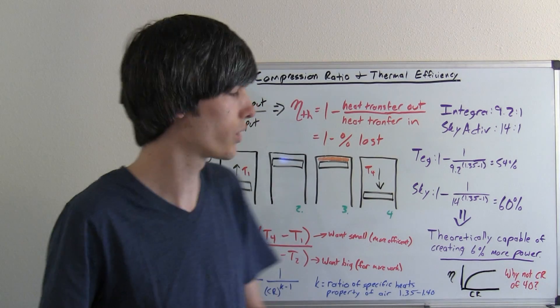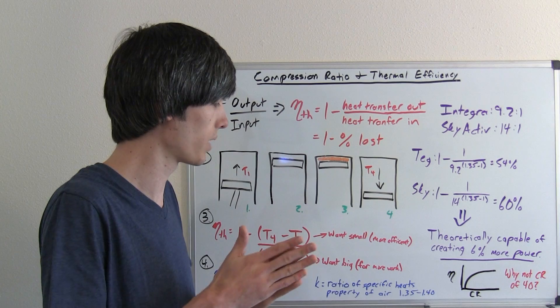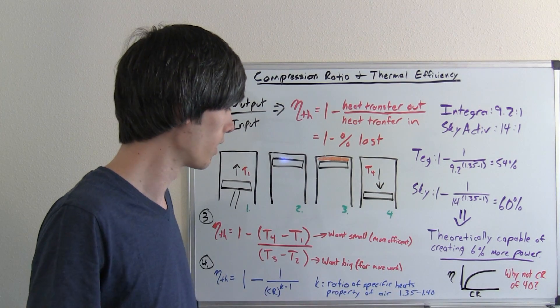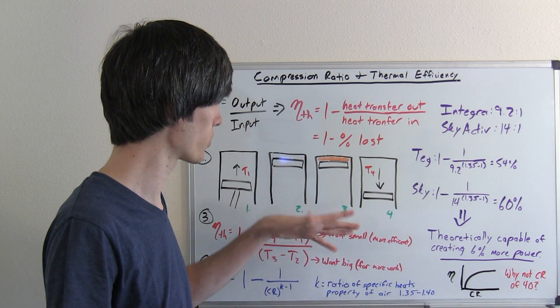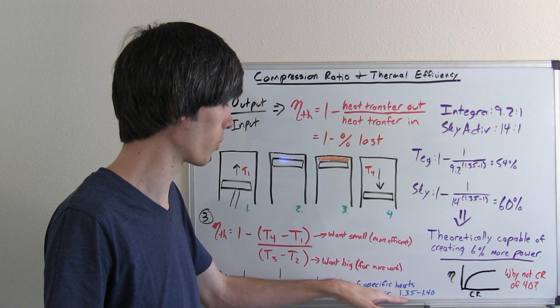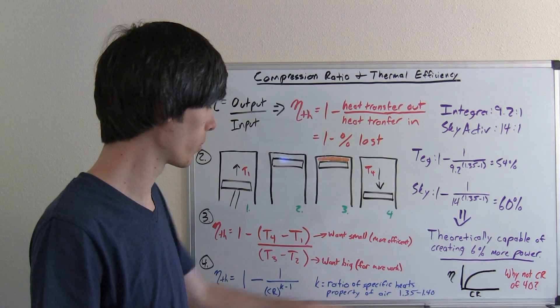Now k is a ratio of specific heats and it's a property of the air. So air at room temperature is about 1.4. That's the ratio of the specific heats and at temperatures, combustion temperatures, it can be around 1.35, an average of about 1.35. So we're going to use 1.35 for k.